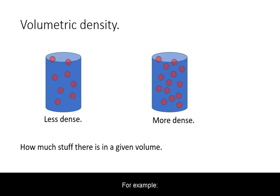For example, here we have two equal volumes, but there is more stuff in the volume on the right, hence it is more dense.